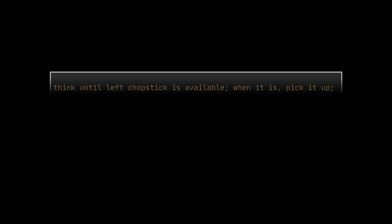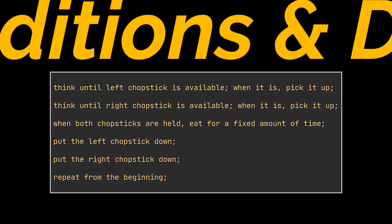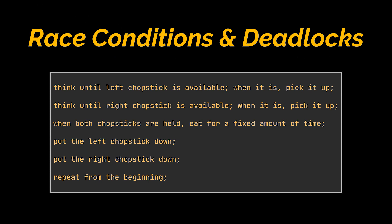An intuitive and wrong solution to this problem is represented by the pseudocode you see. A philosopher will think until the left chopstick is available; when it is, he will pick it up, then think until the right chopstick is available; when it is, pick it up. If both chopsticks are held, he will eat for a fixed amount of time. After he's done eating, he'll put the left and right chopsticks down and keep repeating this behavior.